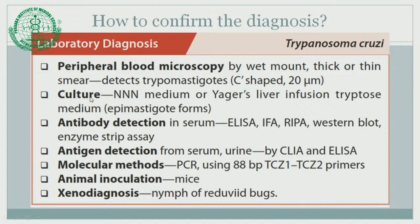Laboratory diagnosis of Chagas disease can be done by direct demonstration of trypomastigote forms in wet mounts or thick or thin smears of peripheral blood. Culture can be done in NNN medium but is very rarely used. Antibody detection and antigen detection are similar to Trypanosoma brucei. Molecular methods — again detection of nucleic acid, DNA — are similar to Trypanosoma brucei. Animal inoculation uses mice, same as in Trypanosoma brucei. Xenodiagnosis is another method where the vector is examined for diagnosis: the vector is made to feed on the patient, and if the parasite can be demonstrated in the reduviid bug, the diagnosis is confirmed.